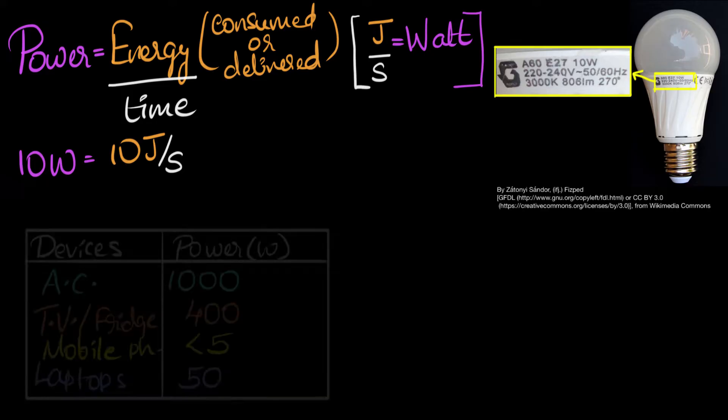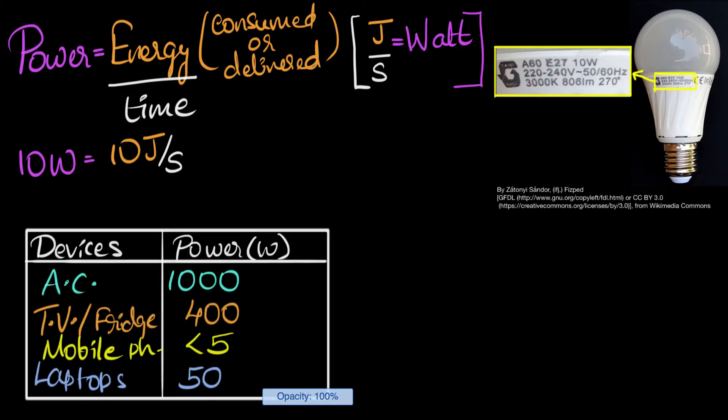Here's a list of power ratings of typical devices that we might find in our houses. For example, air conditioners have pretty high power ratings. They can be as high as 1000 and go all the way up to 2000 and 2500 watts. 1000 watt means our air conditioner consumes 1000 joules of electrical energy every second. But if you look at your mobile phones for example, they consume extremely tiny amount of power, less than 5 watts.